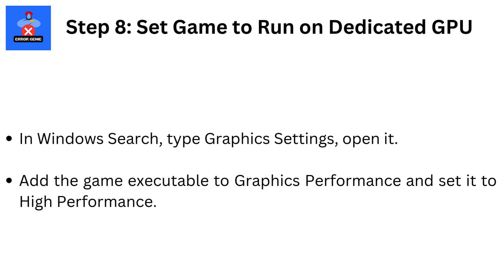Step 8: Set the Game to Run on Dedicated GPU. In Windows Search, type Graphics Settings and open it. Add the game executable to Graphics Performance and set it to High Performance.